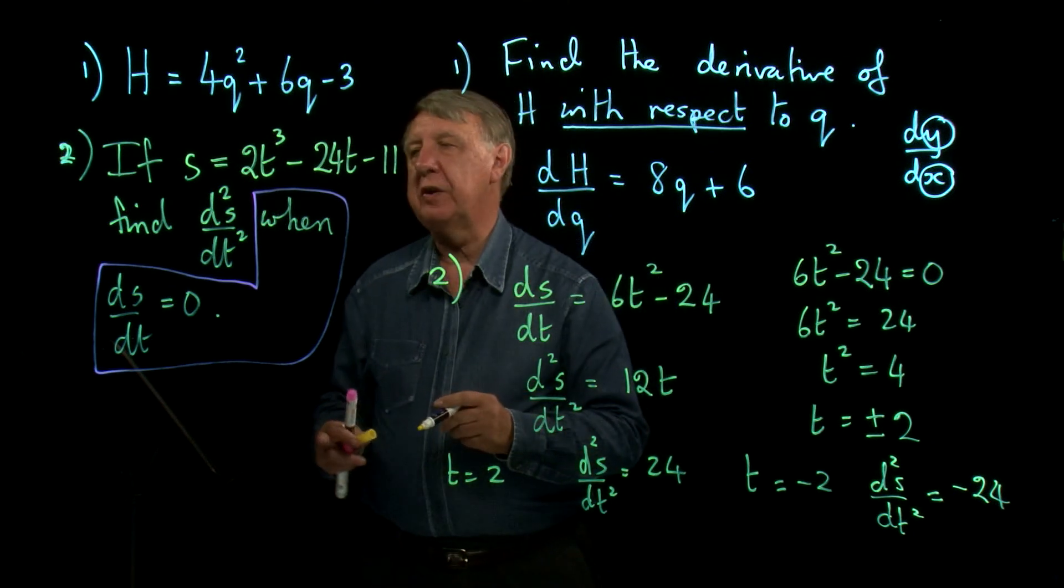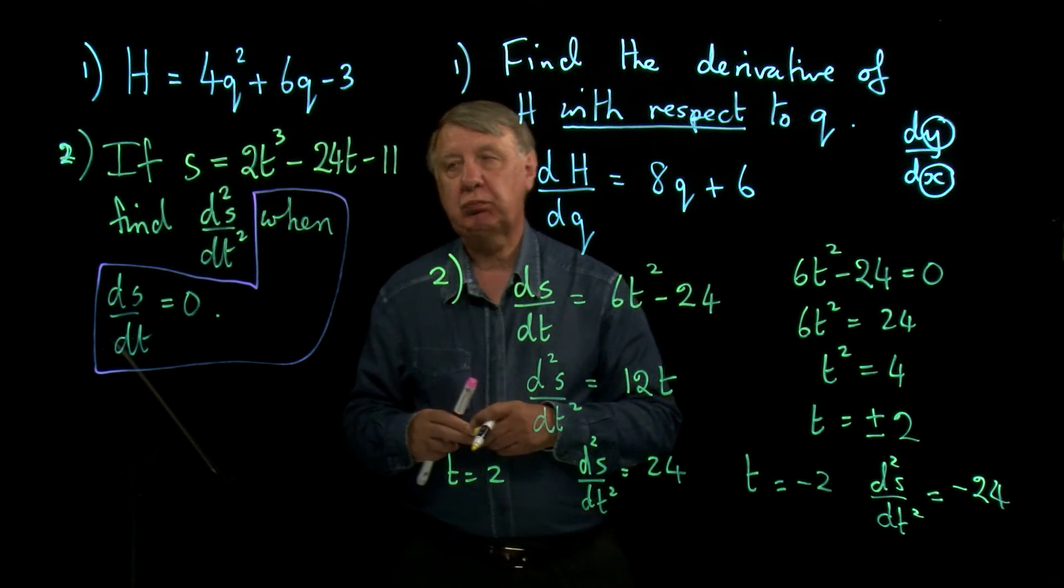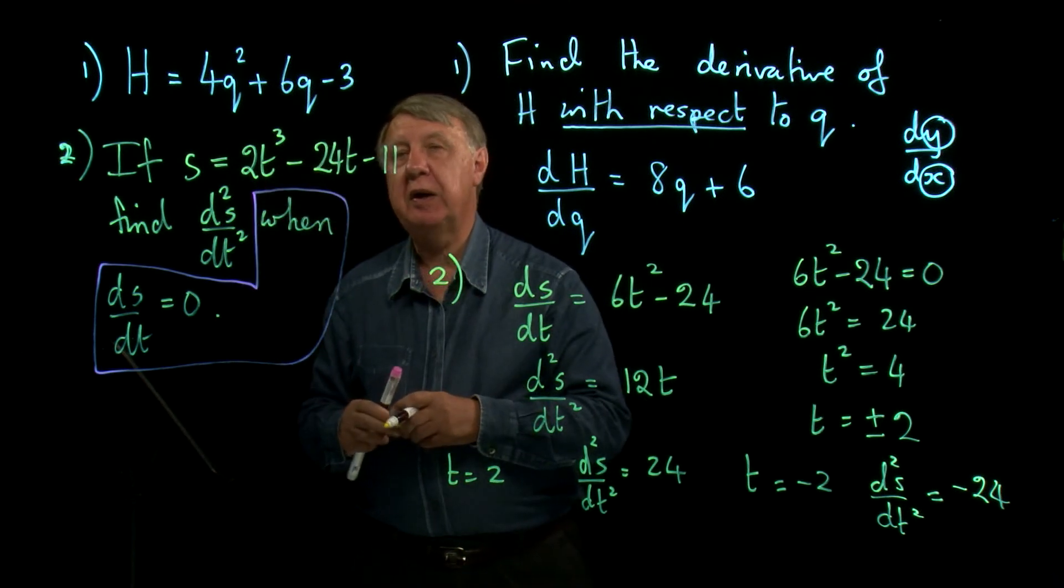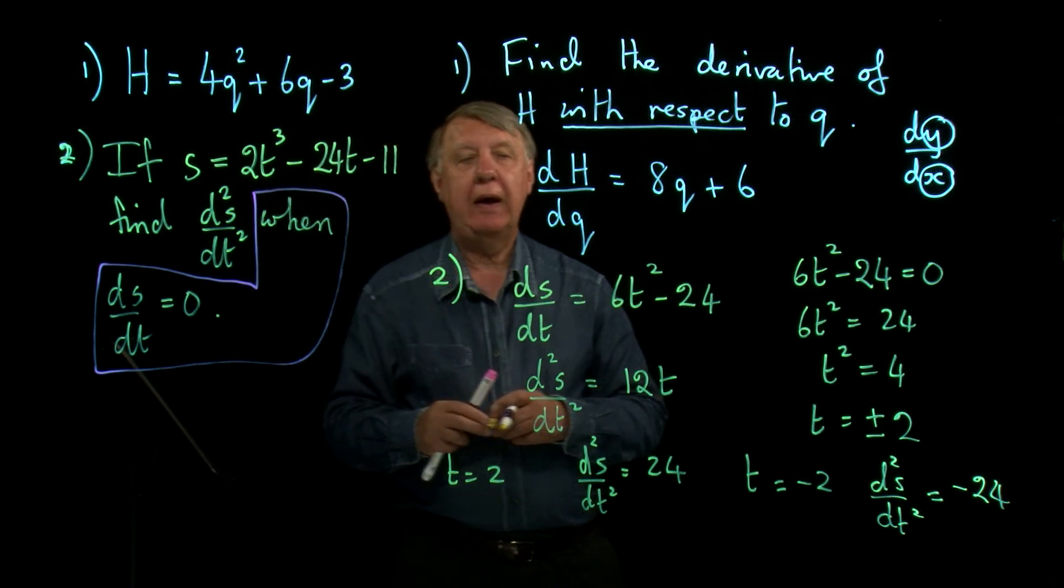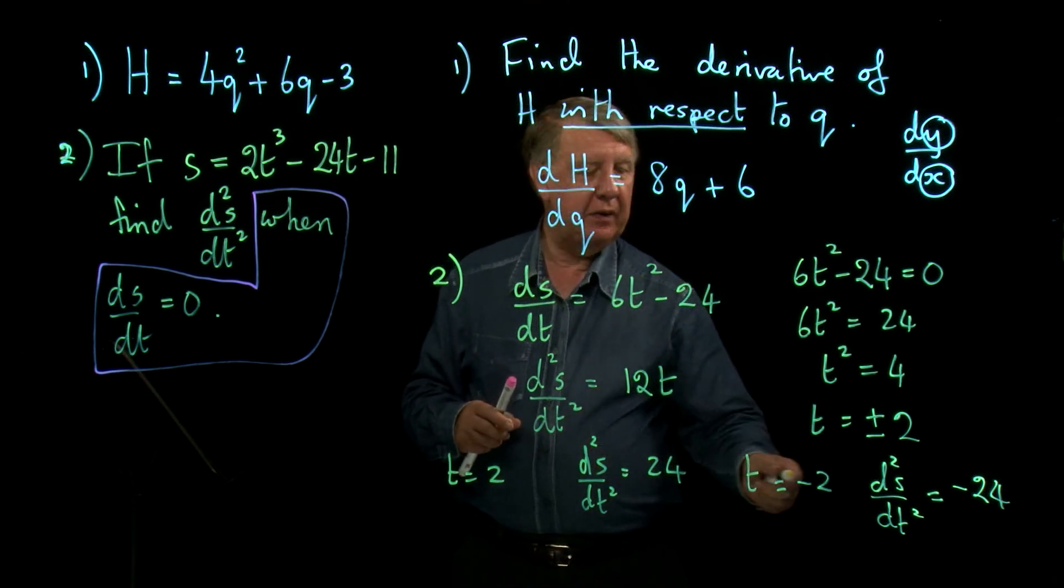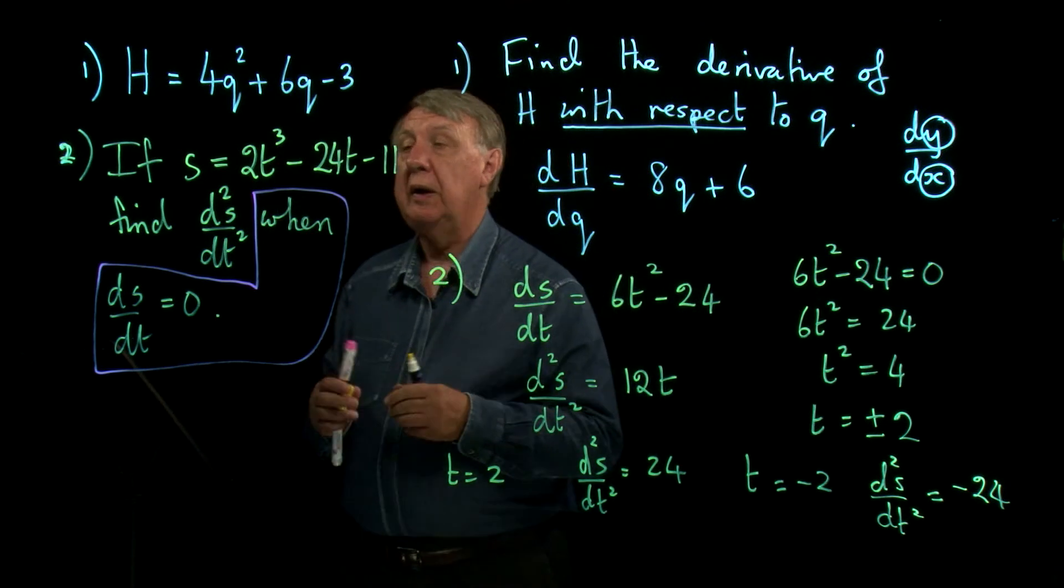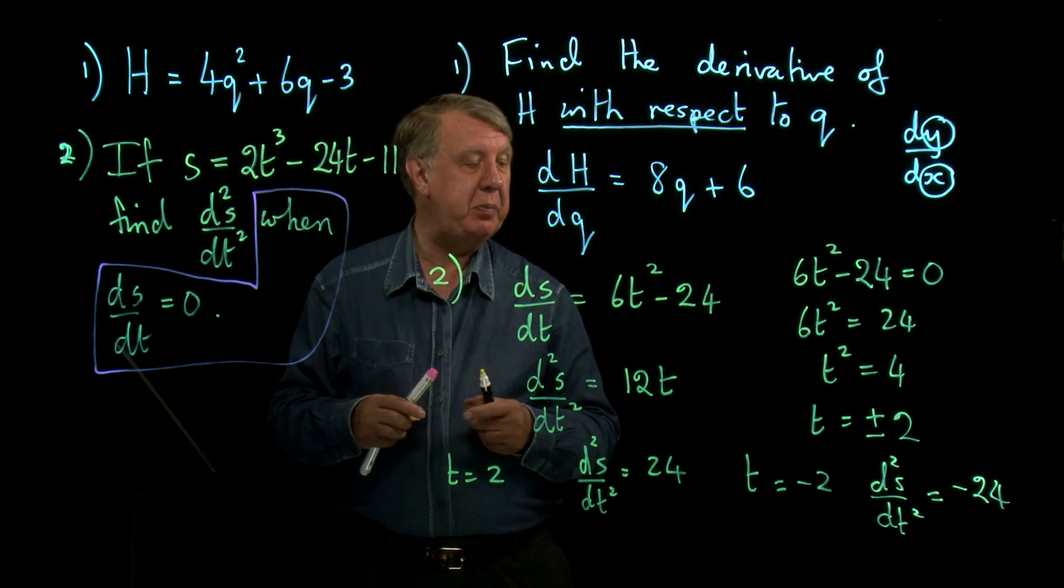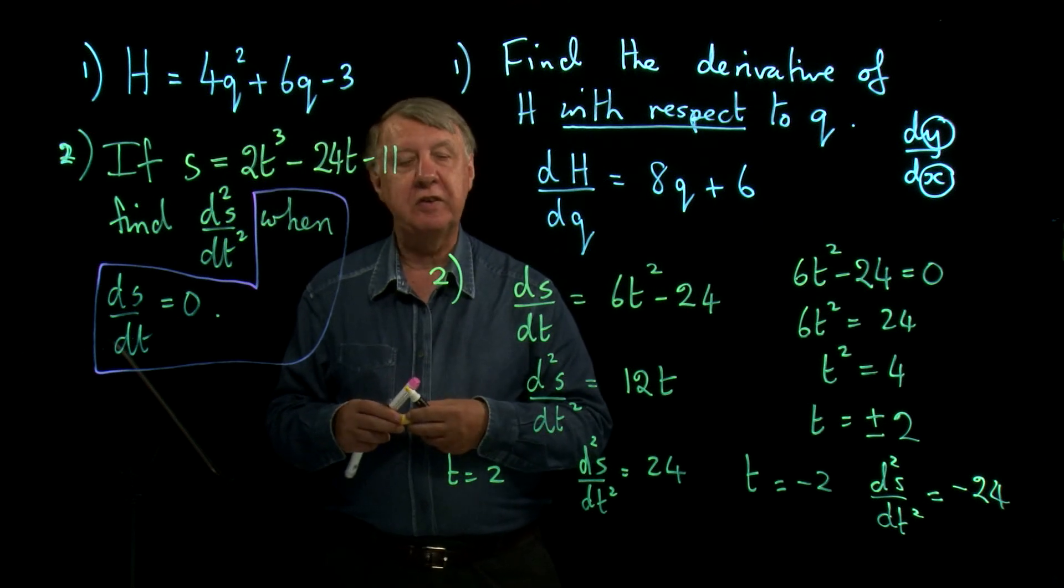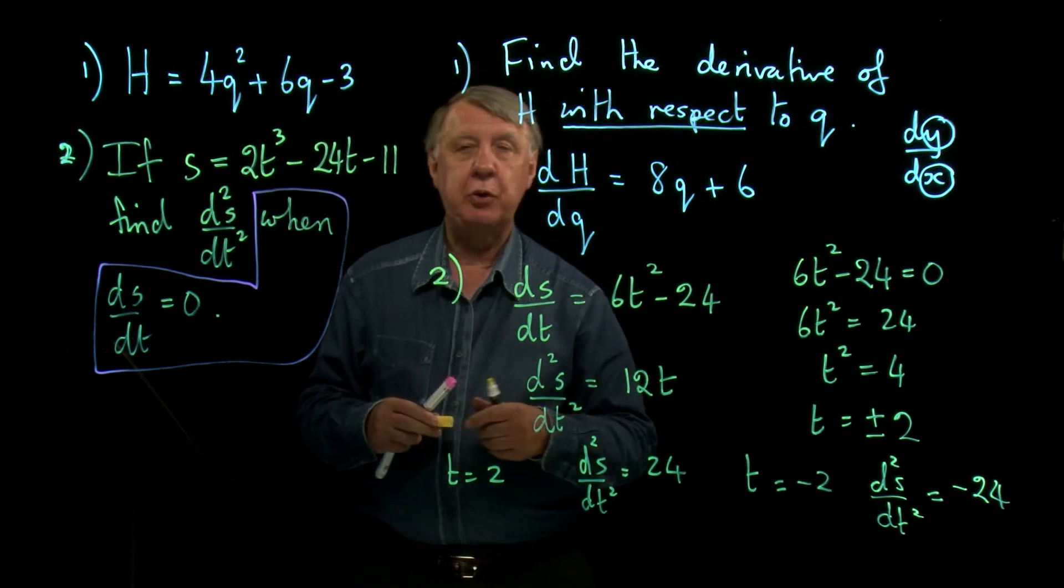What you'll discover later on is that very often s is standing for distance or displacement, and t usually stands for time. In fact, if you're doing a real problem, it may well be that the t equals -2 solution doesn't exist at all and we can't use it. So it may be that there's only one value of d²s/dt², but in this question here, if it was worded like that, there are two possible answers.